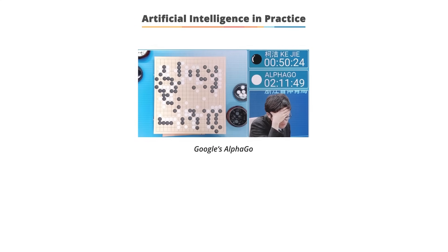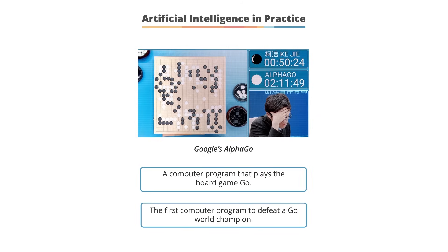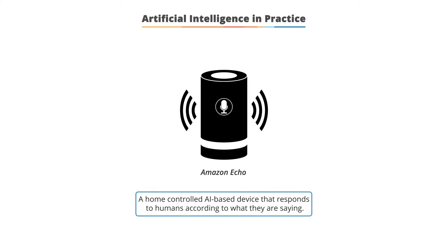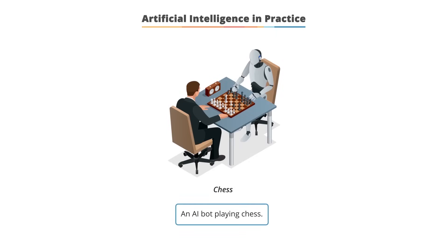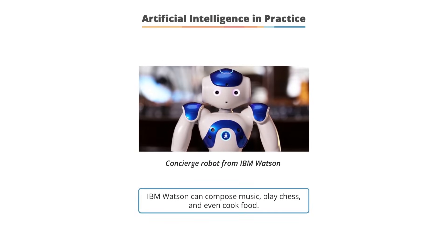Google's AlphaGo is a computer program that plays the board game Go — it was the first program to defeat a world champion at this ancient Chinese game. Amazon Echo is a home-controlled chatbot device that responds to voice commands by playing music, movies, and more, and can control smart home devices like dimming lights or turning appliances on or off. IBM Watson is a concierge robot known for composing music, playing chess, and even cooking food.